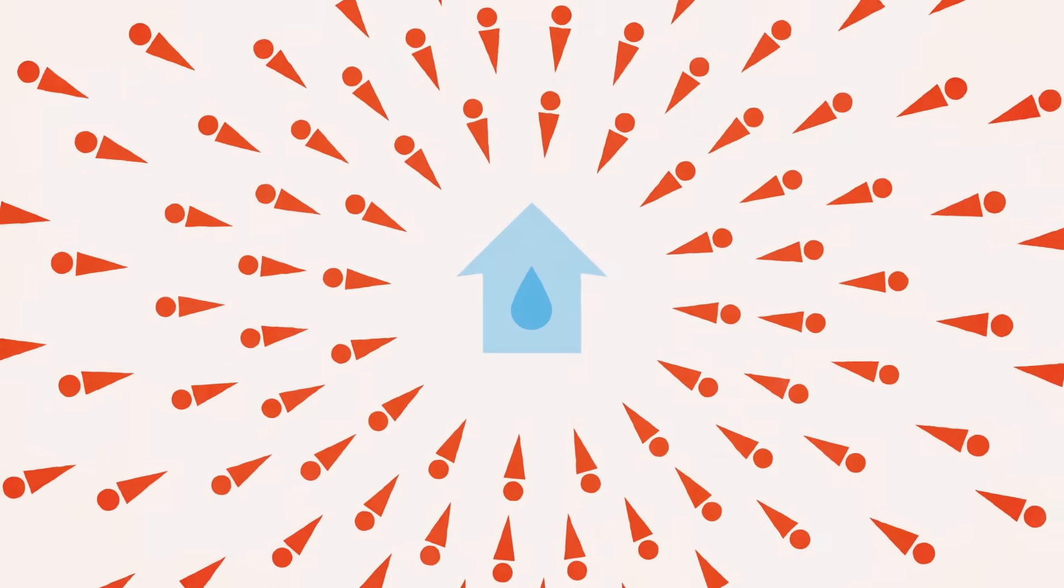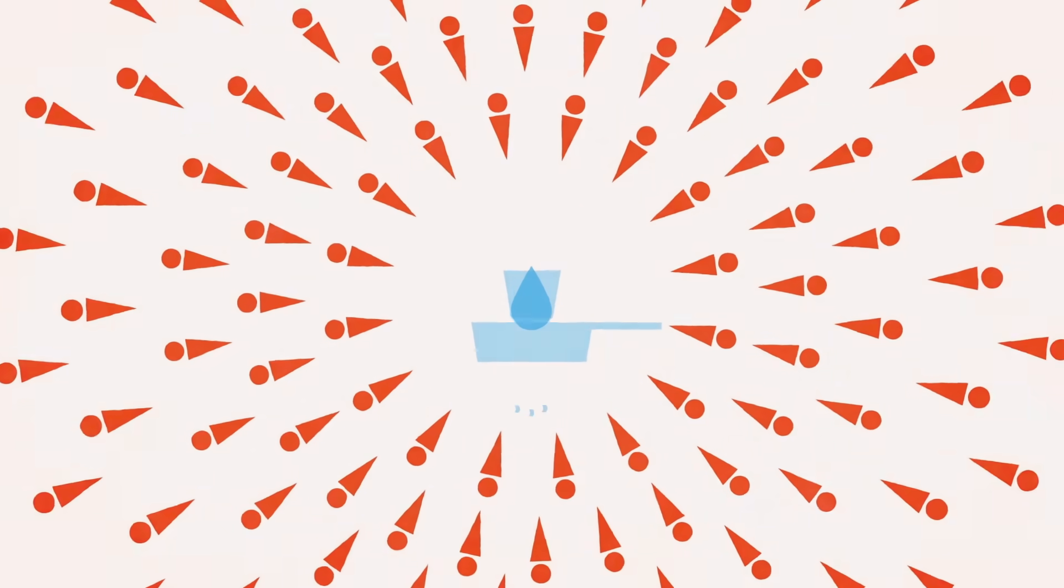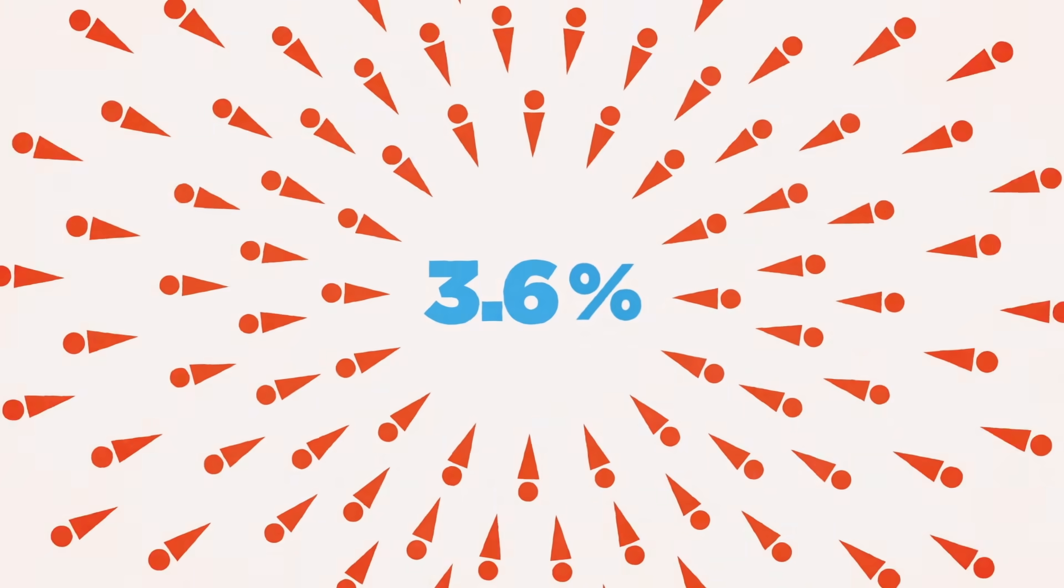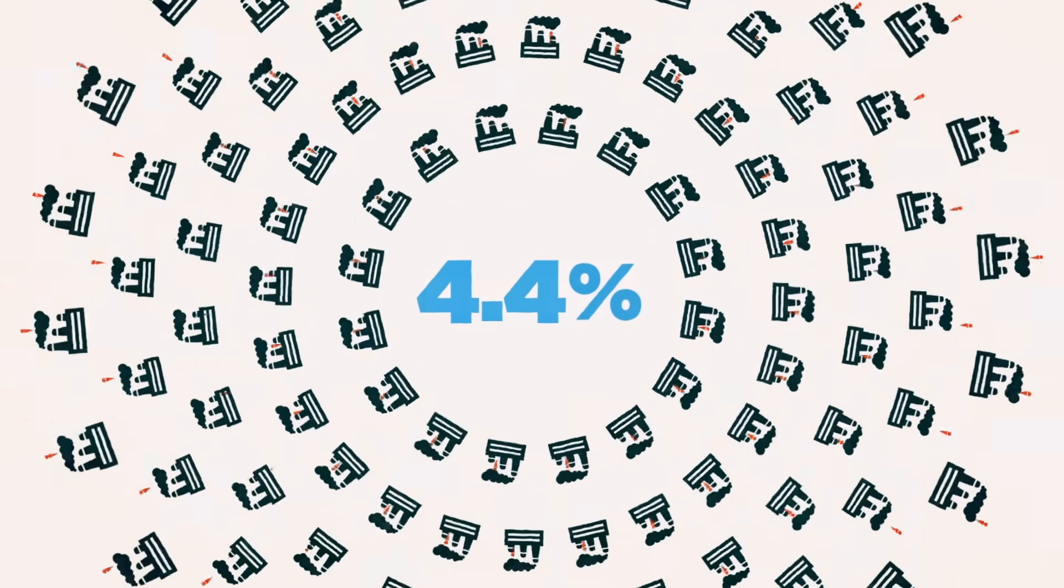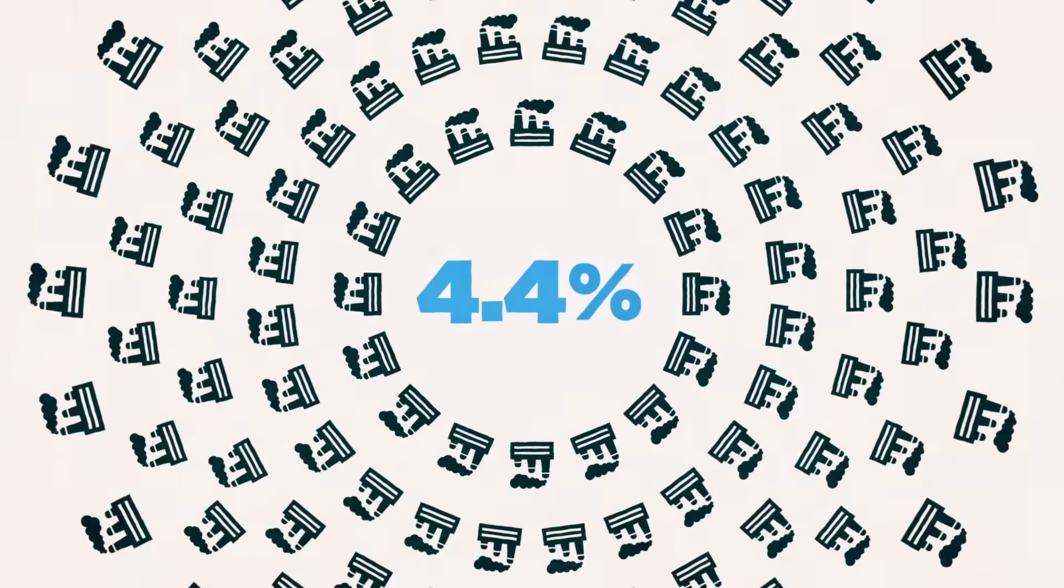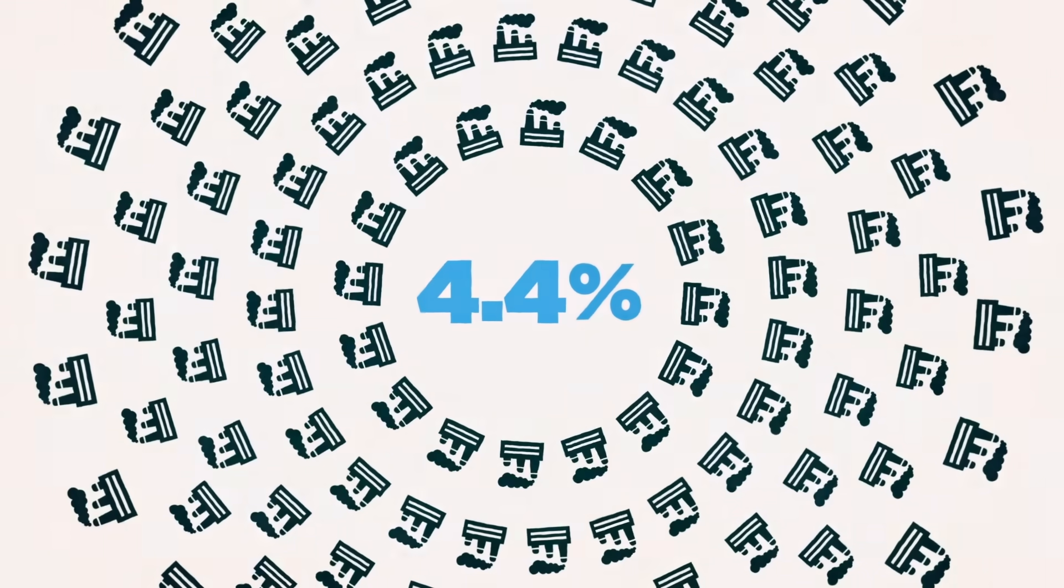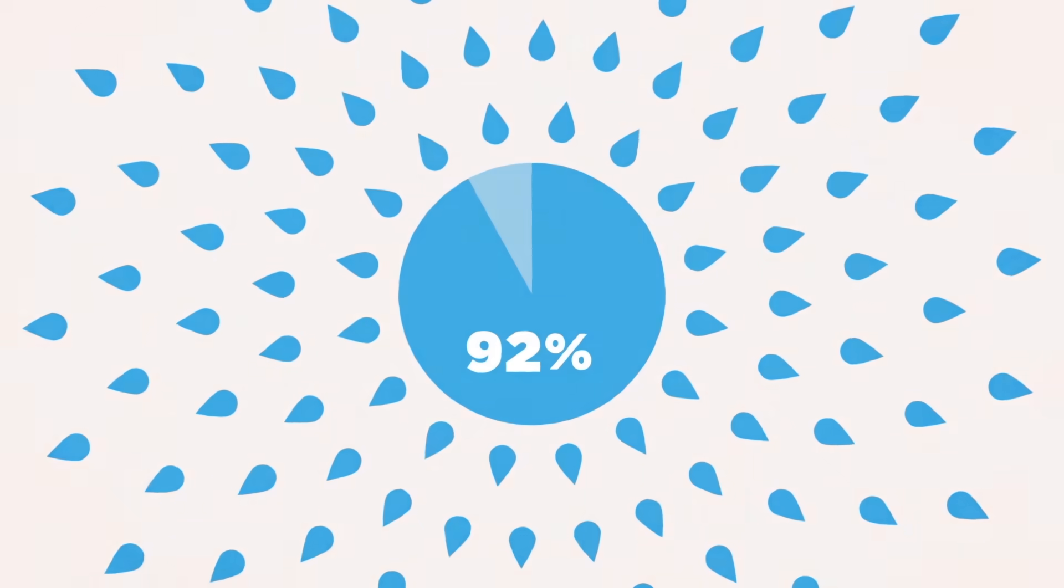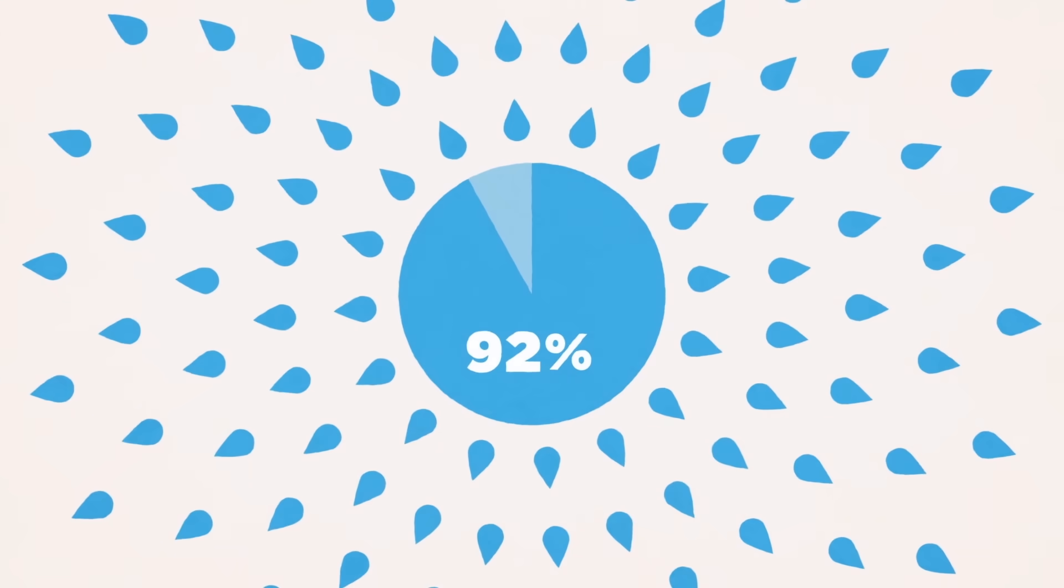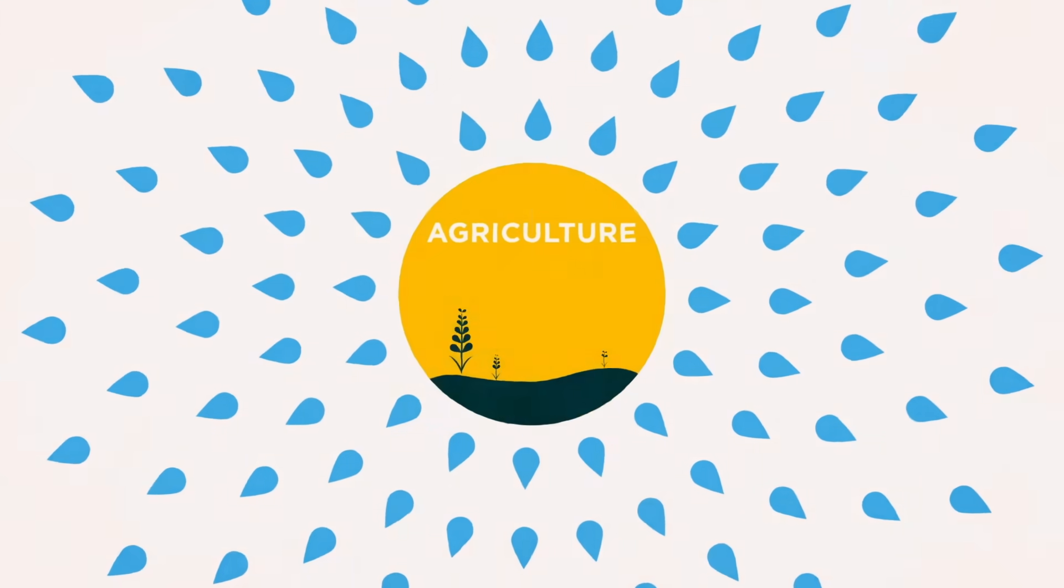In fact, household water, which we use to drink, cook, and clean, accounts for only 3.6% of humanity's water consumption. Another 4.4% goes to the wide range of factories which make the products we buy each day. But the remaining 92% of our water consumption is all spent on a single industry—agriculture.